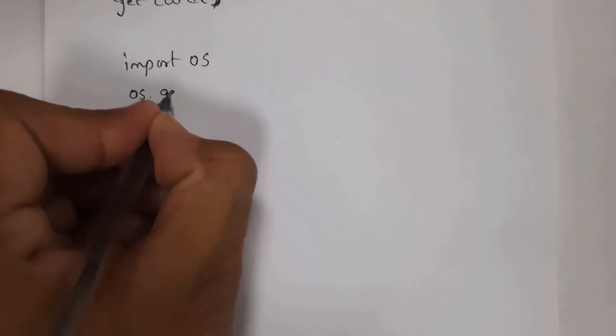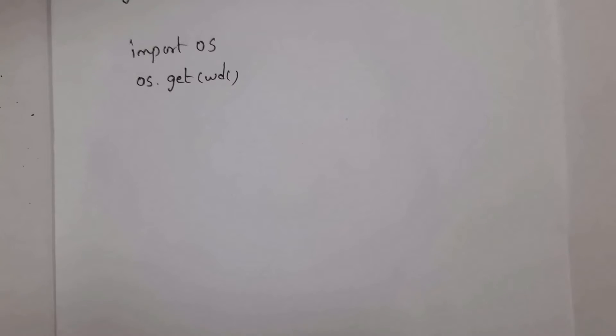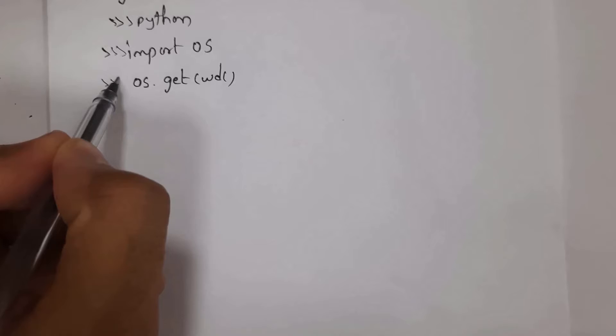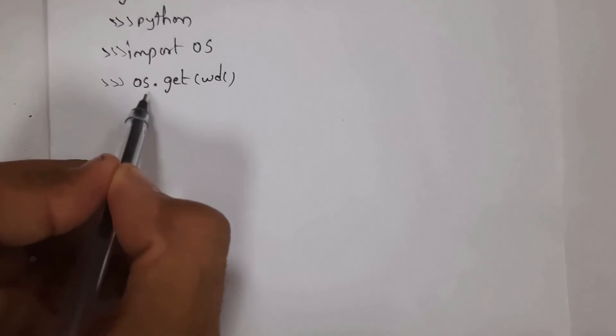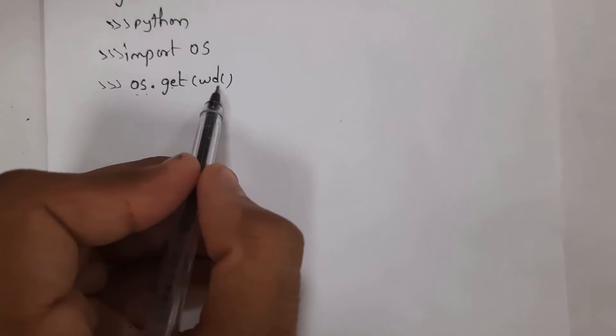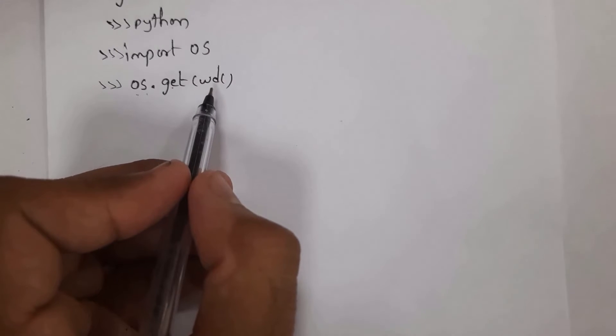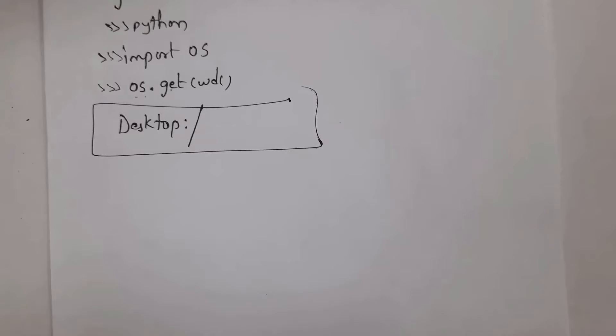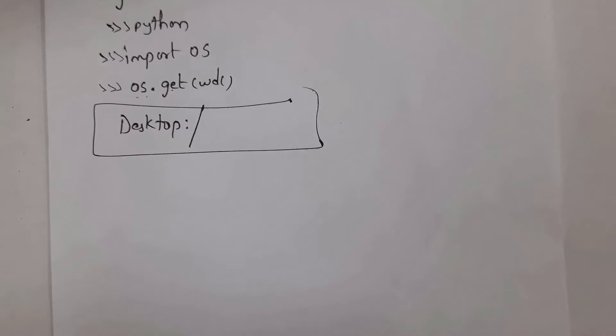I will explain all these functions with examples. First, write 'import os', then write 'os.getcwd()'. If you open the command prompt from the desktop location, your file will be saved in the desktop location. If you open it from local disk D, your file will be saved in local disk D. I opened the command prompt from the desktop location, imported os, and called os.getcwd() — it displays 'desktop', so files will be saved there.